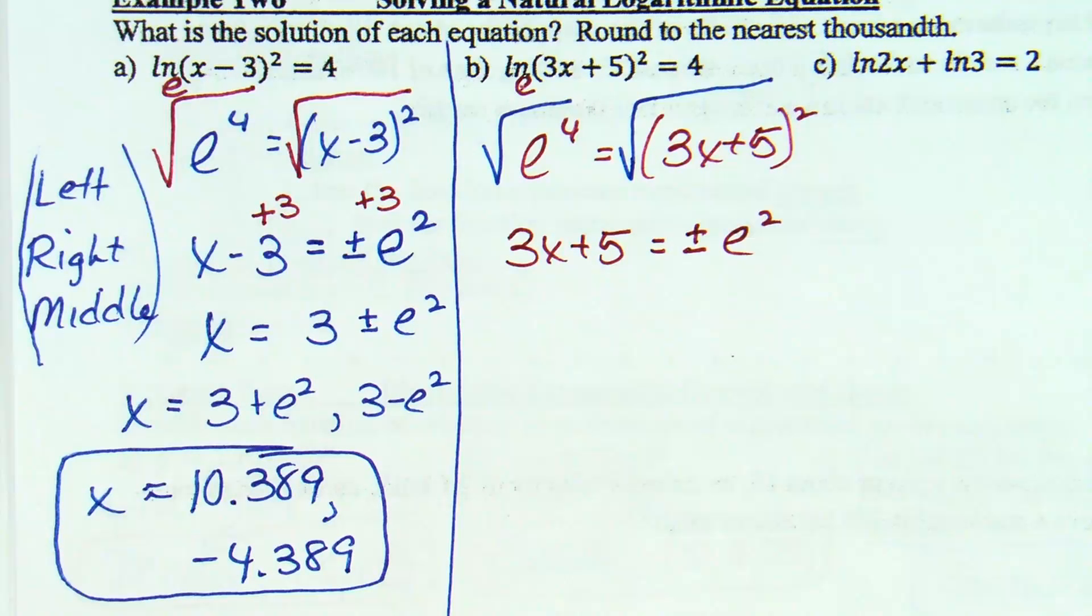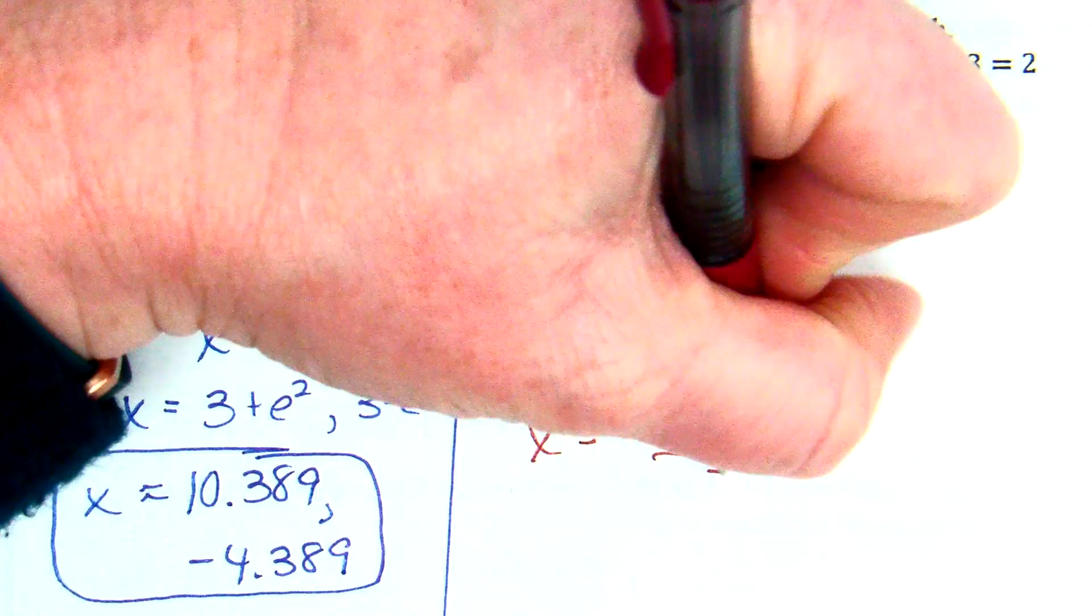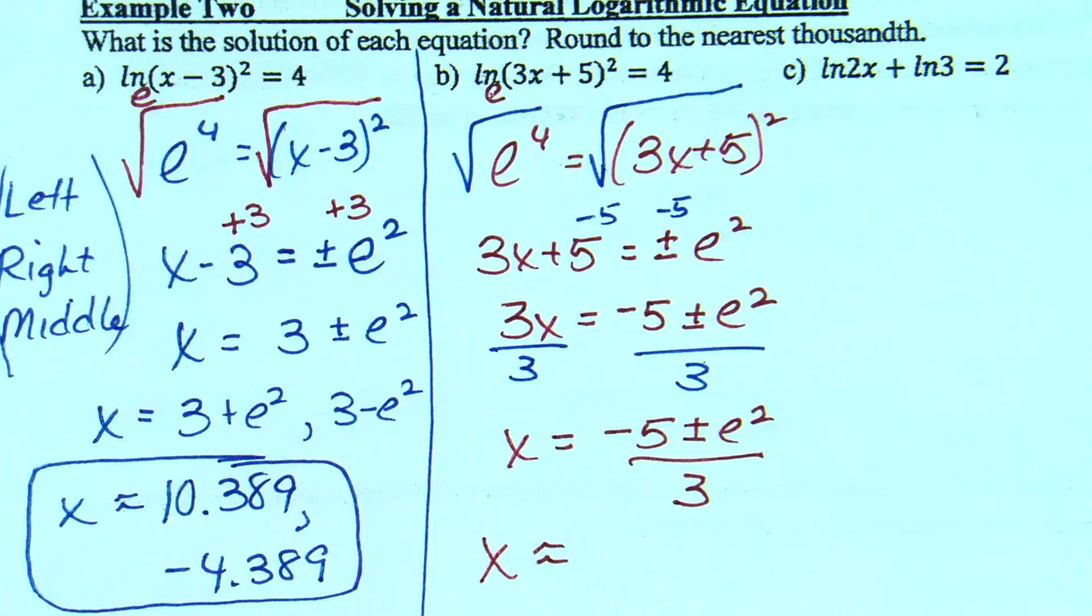How do I solve for x? If it's 3x plus 5, I'm going to subtract 5. 3x equals negative 5 plus or minus E squared. I like to put my number out there in front of the plus or minus. If it's 3 times x, divide by 3. So what I know about x right now is it's going to be negative 5 plus or minus E squared divided by 3.